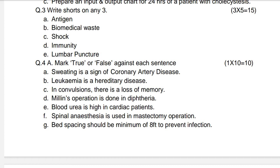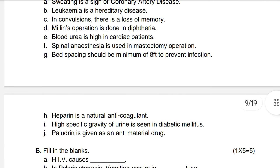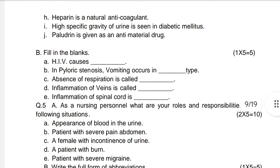True or false statements: Sweating is a sign of coronary artery disease. Leukemia is a hereditary disease. Incumeration involves loss of memory. Williams operation is done in diphtheria. Blood urea is high in cardiac patients. Spinal anesthesia is used in mastectomy operation. Bed spacing should be minimum of eight feet to prevent infection. Heparin is a natural anticoagulant. High specific gravity of urine is seen in diabetes mellitus.